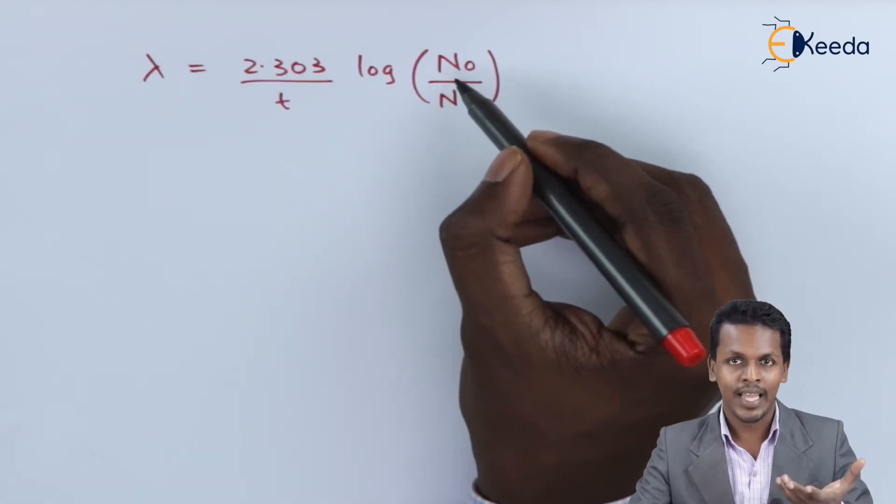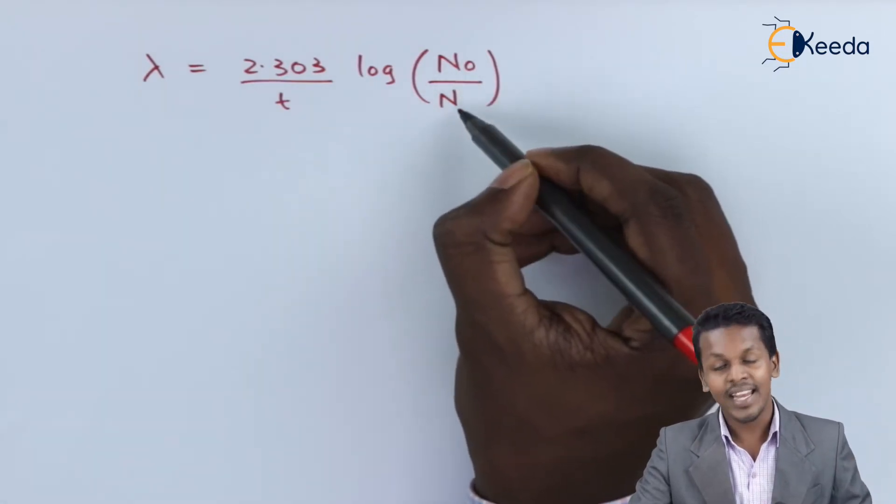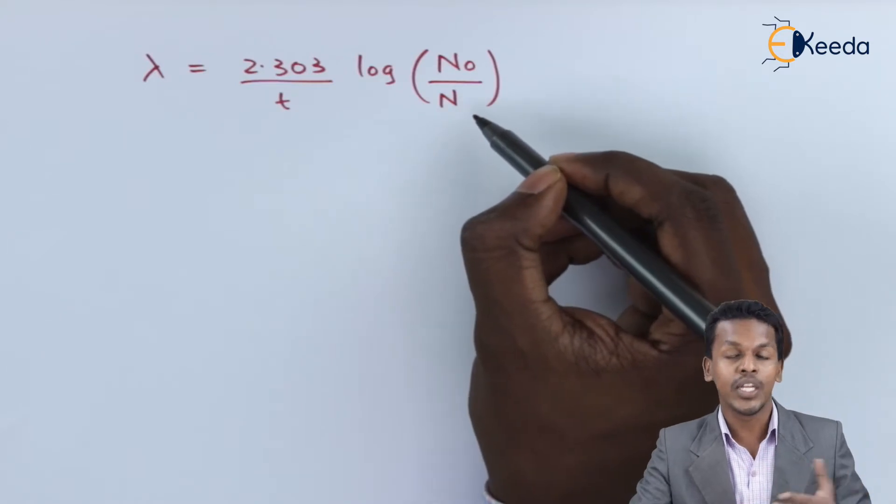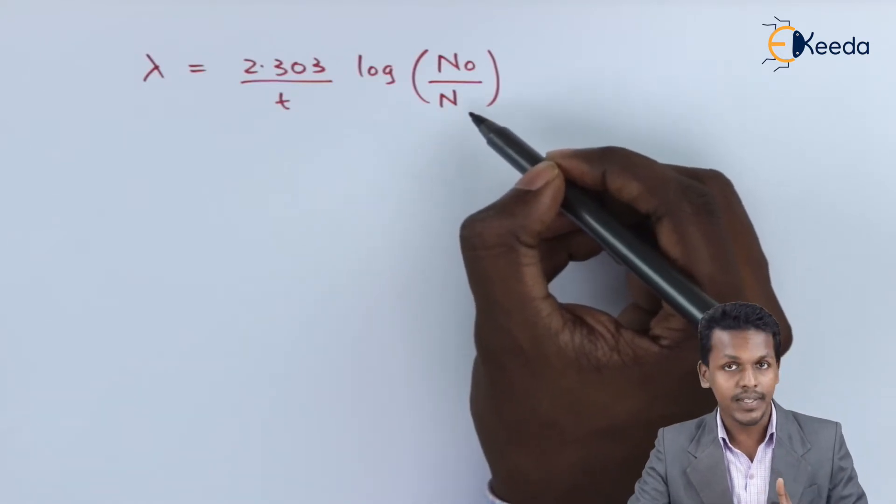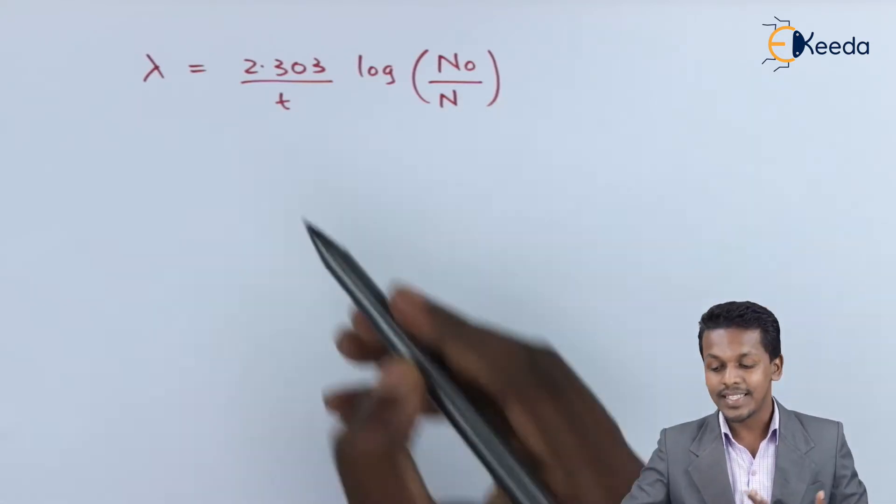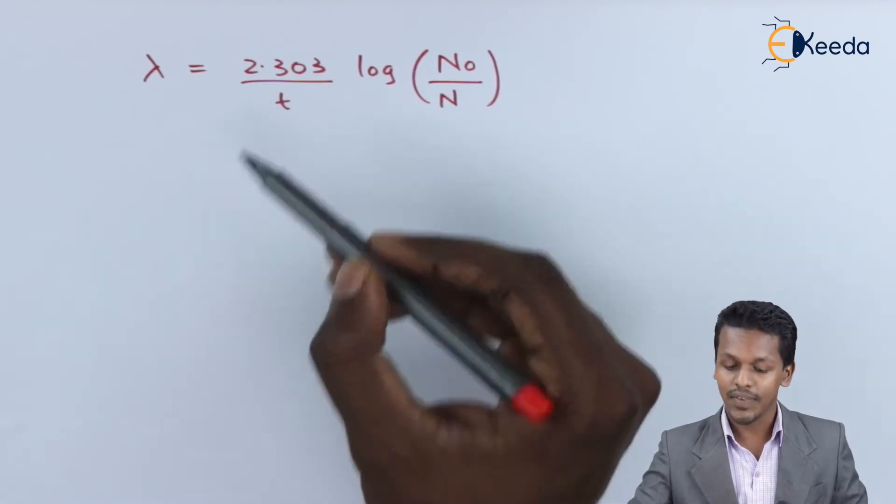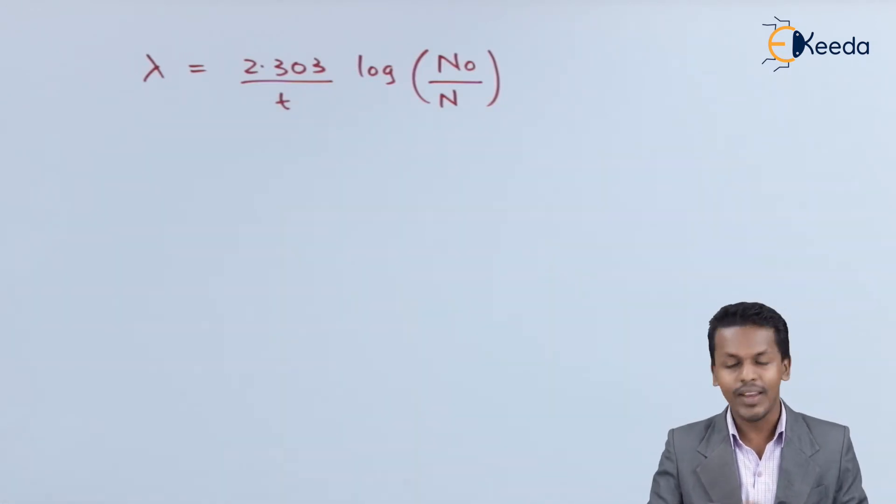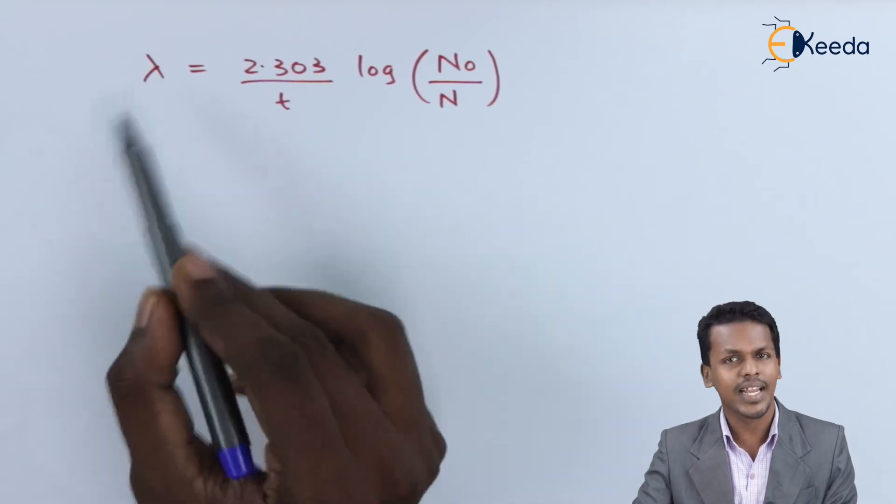Here, N₀ means the number of nuclei present before disintegration or at the initial time when t is 0, and N is the number of nuclei left after a particular time. In this case, the time given to us is 75 minutes, so let us substitute the values.